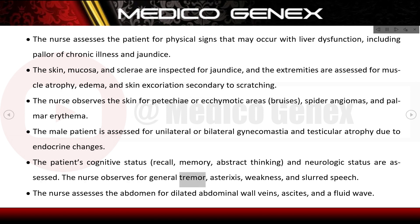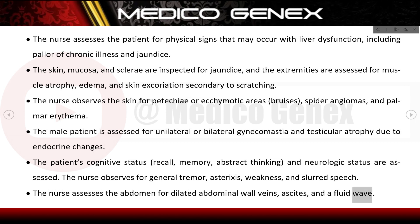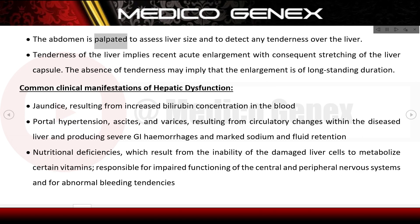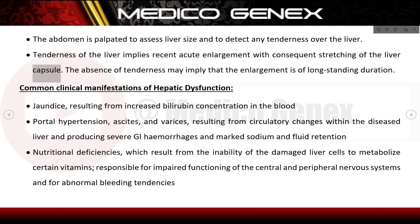The patient's cognitive status, recall, memory, abstract thinking, and neurologic status are assessed. The nurse observes for general tremor, asterixis, weakness, and slurred speech. The abdomen is assessed for dilated abdominal wall veins, ascites, and a fluid wave. The abdomen is palpated to assess liver size and detect any tenderness over the liver.